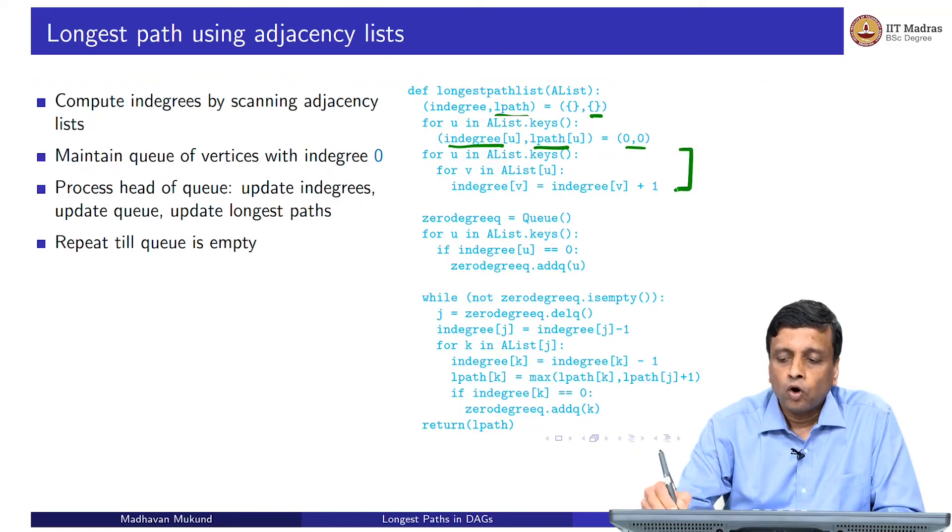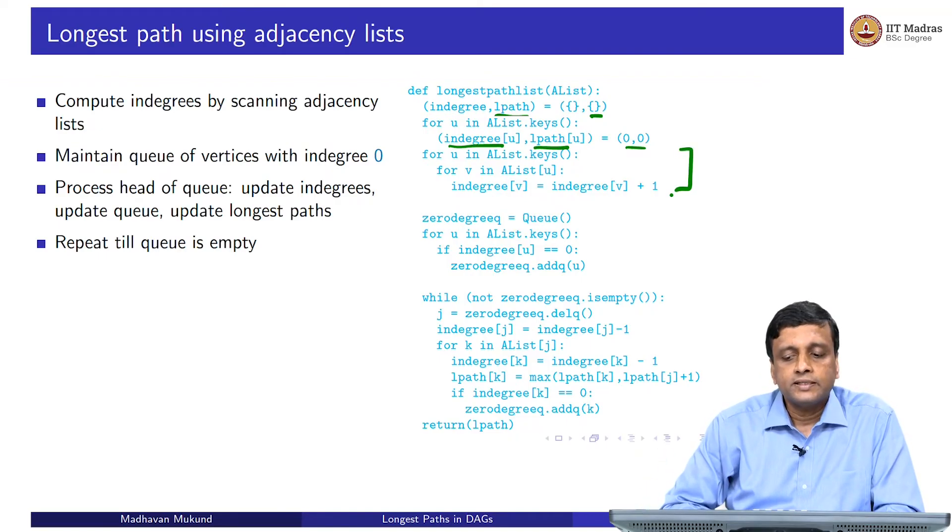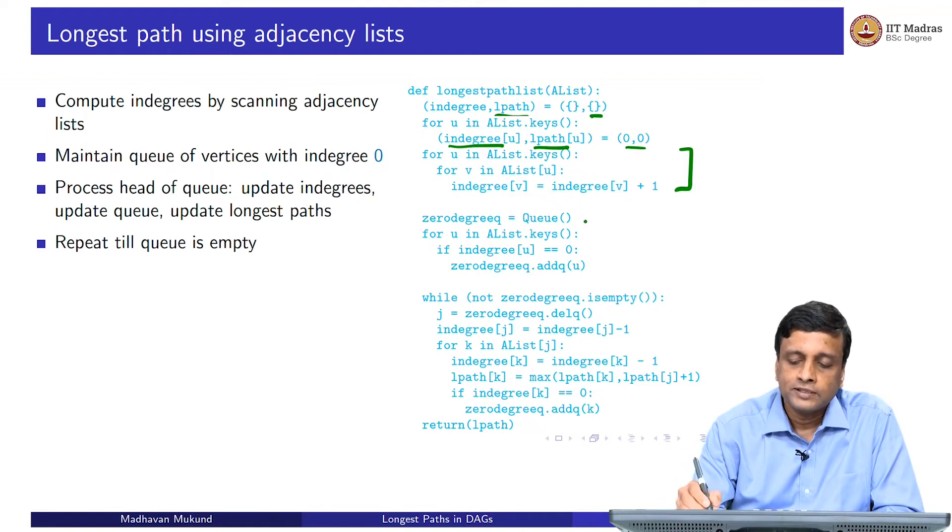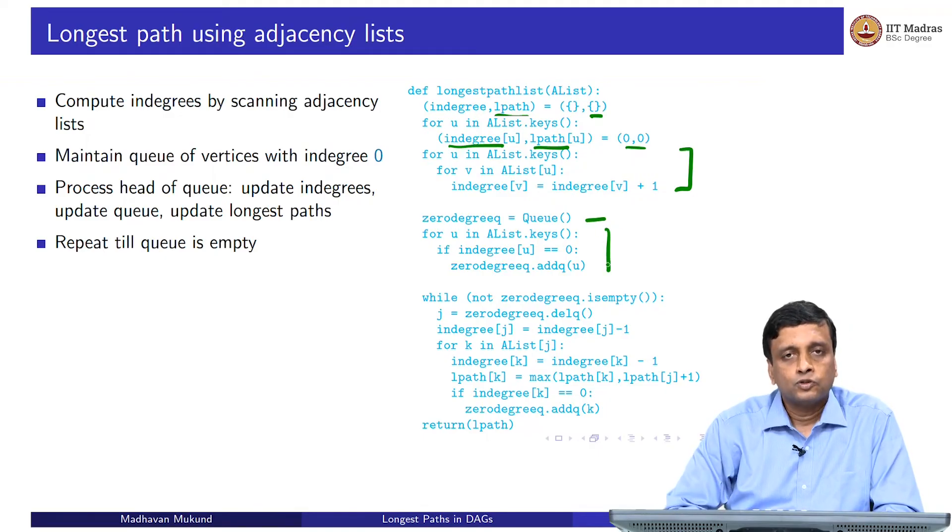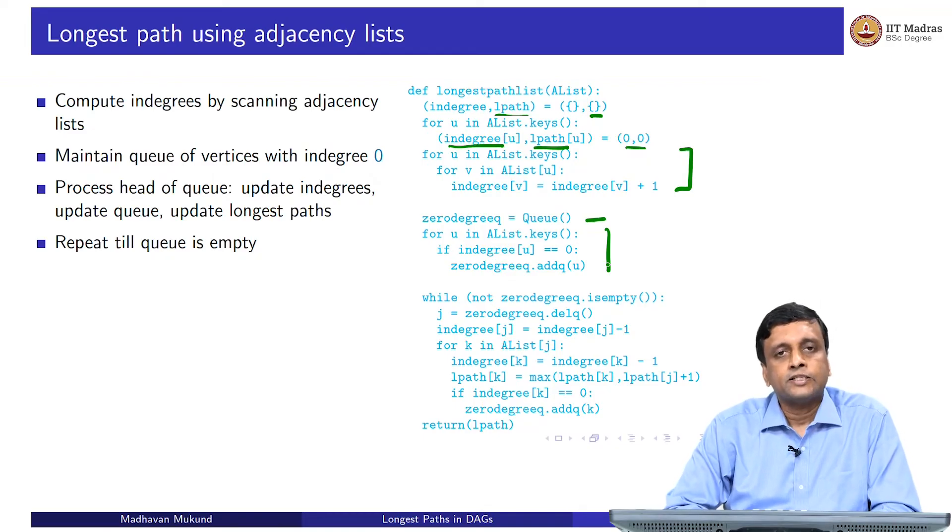We initialize the indegree and the longest path of every vertex to be 0. As before, we will walk through all the vertices and update the indegree in time proportional to the number of vertices. As before, because we are doing the same topological sort calculation, we keep the 0 degree queue and we put all the 0 degree vertices into the queue. So far we have done nothing different from what we are doing before, except that instead of keeping track of this topological sort list, we are keeping track of this L path, longest path dictionary.